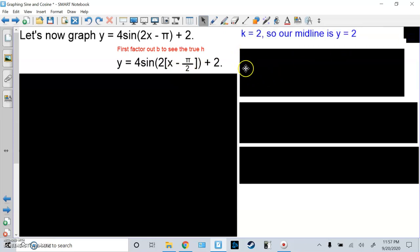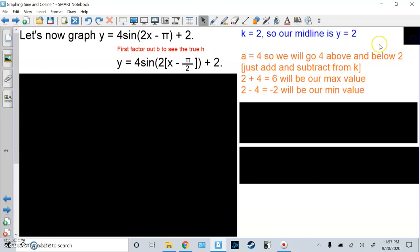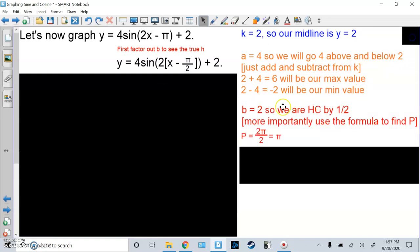First k. k is positive 2. That means our midline is positive 2. Then, we look at a. a is 4, so we go 4 above and below 2. Just add or subtract from k. So 2 plus 4 is 6. That's our max. 2 minus 4 is negative 2. That's our minimum. Then, we look at b. b is 2, so technically, we're doing a horizontal compression by 1 over 2. But more importantly, let's use the formula to find the period. The period equals 2 pi over 2, which reduces to pi.